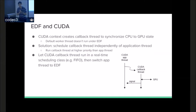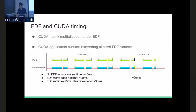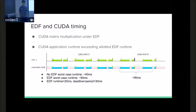One solution is to schedule the callback thread independently of the application thread. We say the app thread runs under EDF, but we don't want the callback thread to run under EDF — let's run it under another real-time class, say First In First Out, or FIFO. This is CUDA matrix multiplication, and the graph shows what happens when you exceed your allotted runtime. Without EDF, this operation takes around 40 milliseconds. When you run under EDF, it takes about 90 milliseconds.